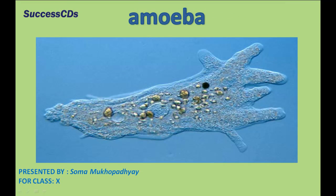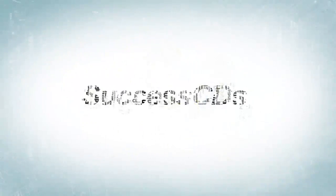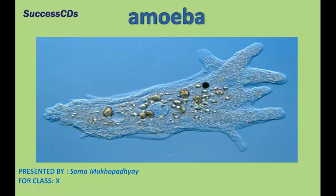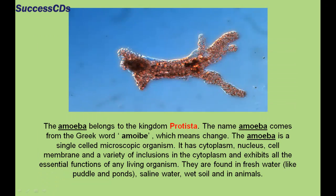Let me tell you about the nutrition and reproduction of a unicellular animal called amoeba. Amoeba belongs to the kingdom Protista. The name amoeba comes from the Greek word 'amoeba' which means change. The amoeba is a single-celled microscopic organism. It has cytoplasm, nucleus, cell membrane, and a variety of inclusions in the cytoplasm, and exhibits all the essential functions of any living organism.